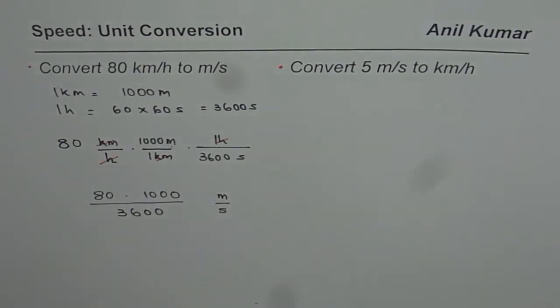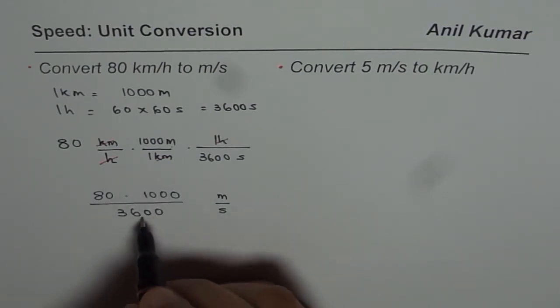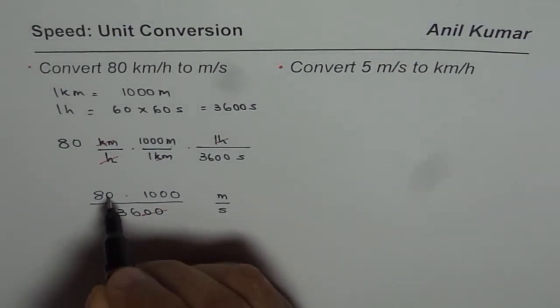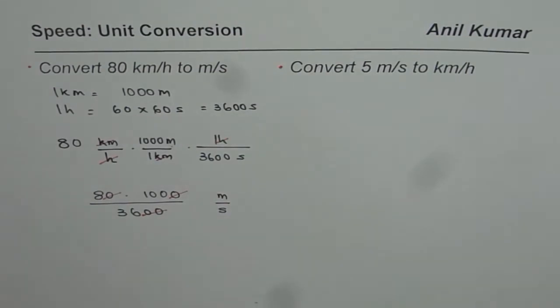So what you get here is 80 times 1000 divided by 3600 and the units are meters per second. You get an idea? That is how you can very easily do such questions. Now simplification, definitely if you have to use the calculator, you can just cancel out these zeros first to begin with, and then the numbers you can also cancel as much as you can.